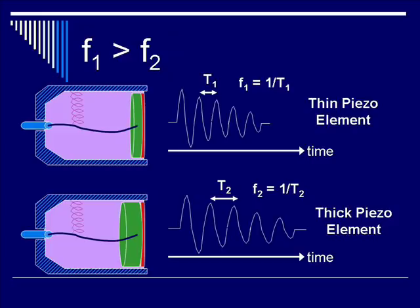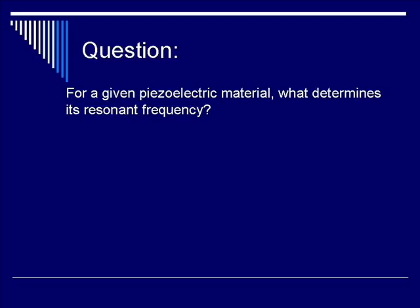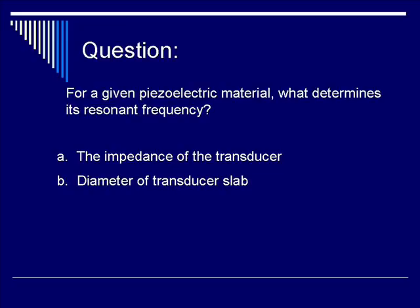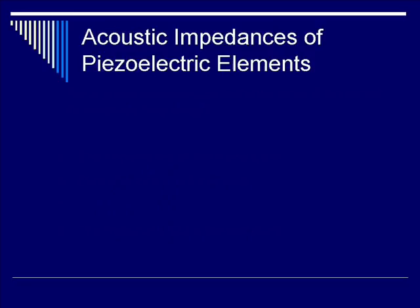Question: For a given piezoelectric material, what determines its resonant frequency? Is it A, the impedance of the transducer? B, the diameter of the transducer slab? C, the thickness of the transducer material? Or D, the material's Curie temperature? The correct answer is C — the thickness of the transducer material, as discussed earlier.